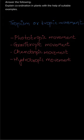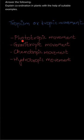The first type is phototropic movement. 'Photo' means light, so the growth of plant parts in response to light is the phototropic movement. The example is the growth of the shoot system — the stem grows in response to light, where light is the stimulus. So the growth of the shoot system is an example of phototropic movement.